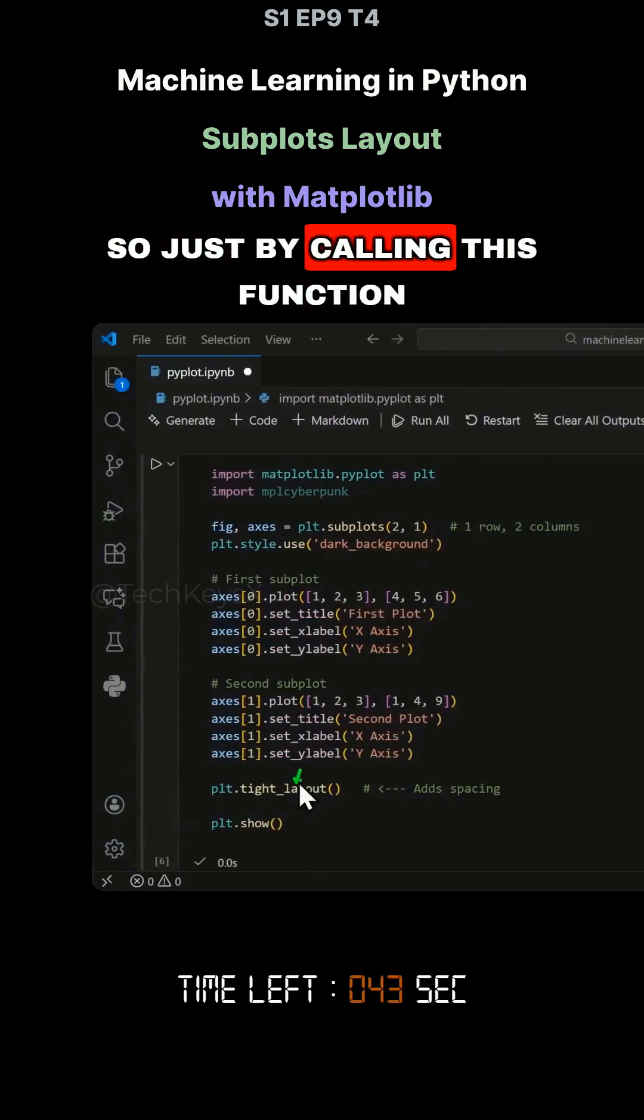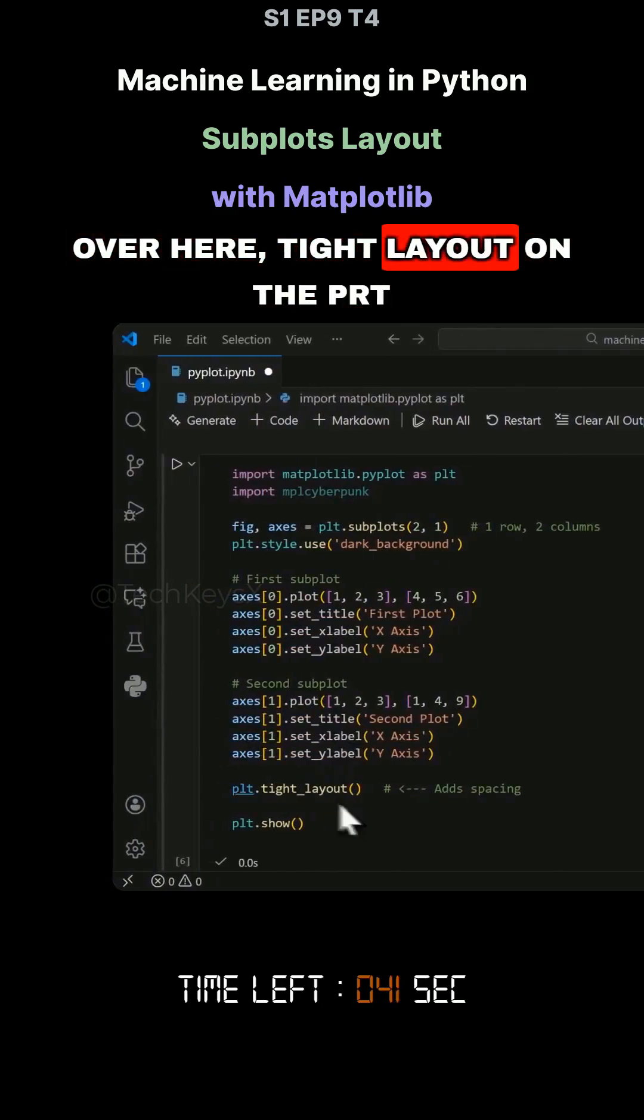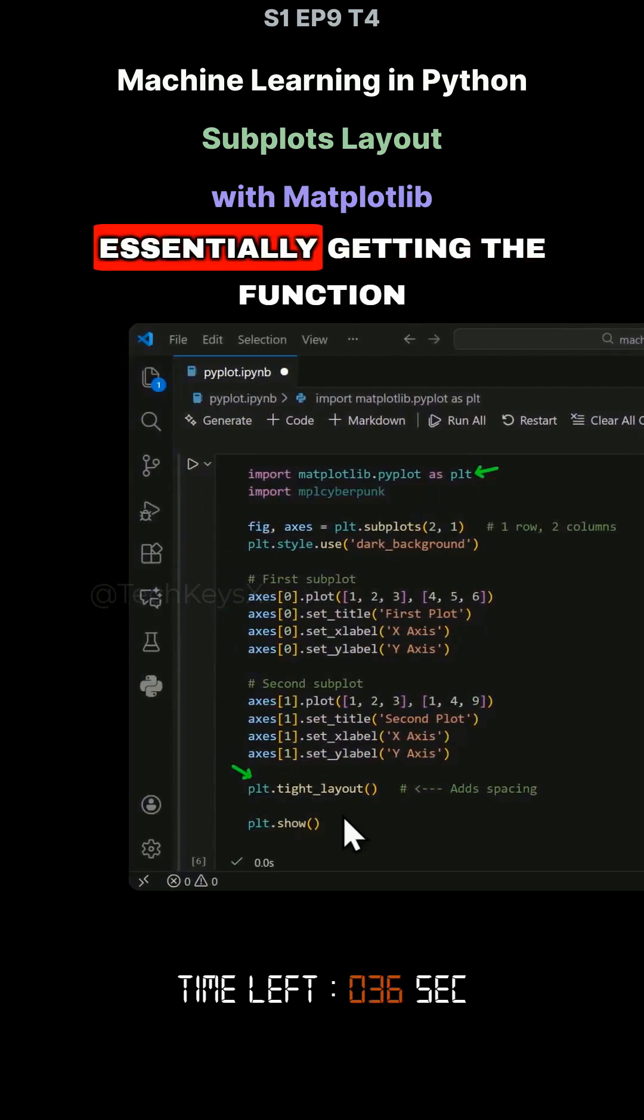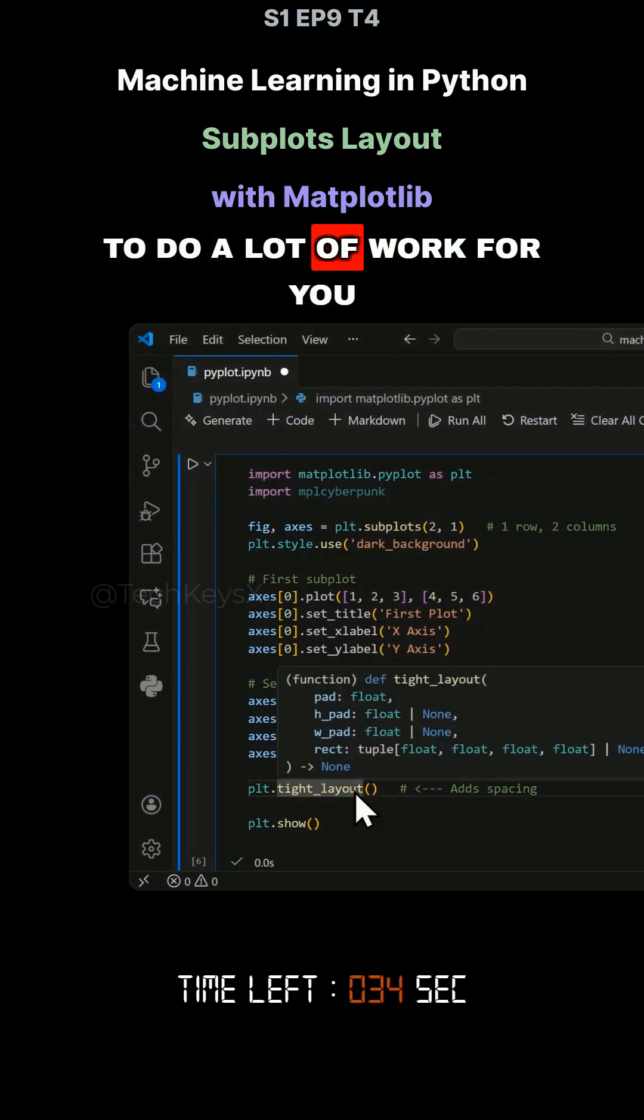And then it will place the next graph further down from that point. So just by calling this function, tight_layout on the plot module, you are essentially getting the function to do a lot of work for you.